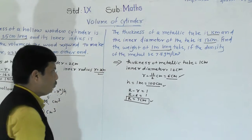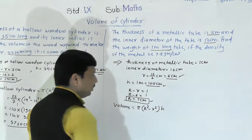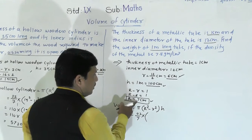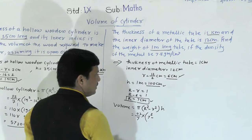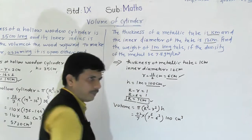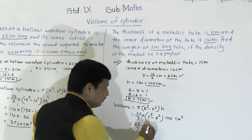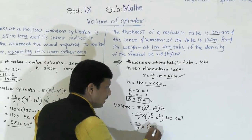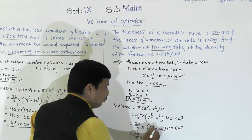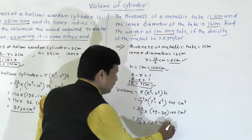Volume of the metallic tube = π(R² - r²) × h = 22/7 × (7² - 6²) × 100. Calculating: 7² = 49, 6² = 36, so 49 - 36 = 13. Therefore Volume = 22/7 × 13 × 100 cm³.